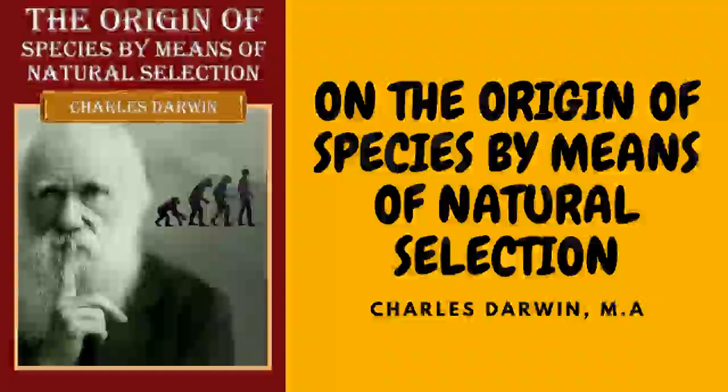Not a single domestic animal can be named which has not in some country drooping ears; and the view suggested by some authors, that the drooping is due to the disuse of the muscles of the ear from the animals not being much alarmed by danger, seems probable. There are many laws regulating variation, some few of which can be dimly seen and will be hereafter briefly mentioned.